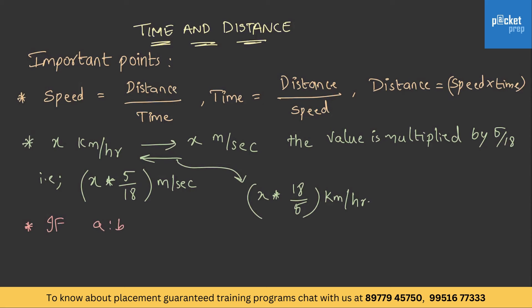If a is to b is the ratio of speed of a and b, then time taken ratio is 1 by a is to 1 by b.